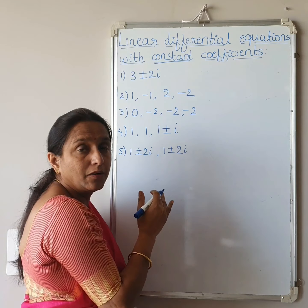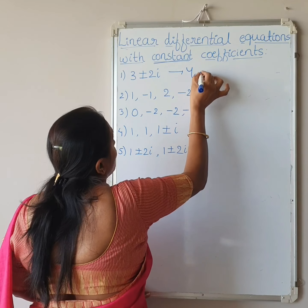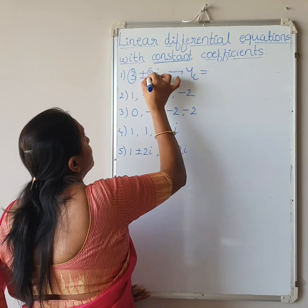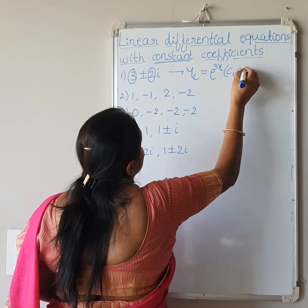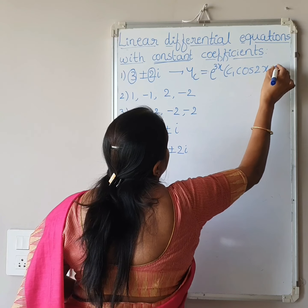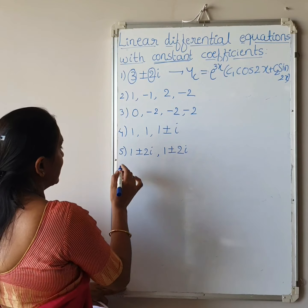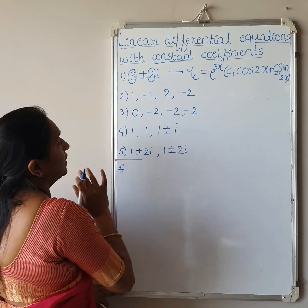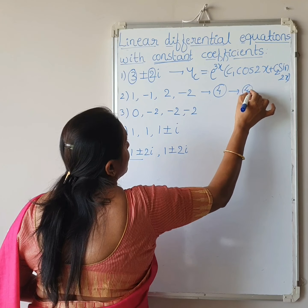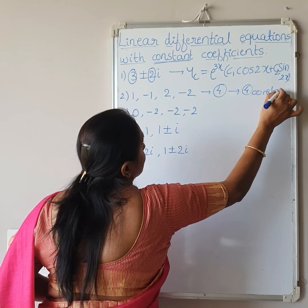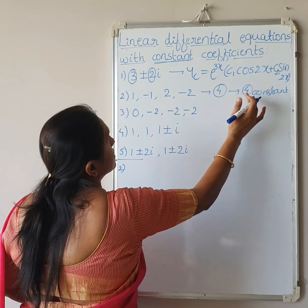Now we solve practice problems based on these rules. For the first example, the roots are imaginary — it is the third type. The real part is 3 and the imaginary part is 2, so yc equals e^(3x)·(c1·cos(2x) plus c2·sin(2x)). This is the solution for the first example.